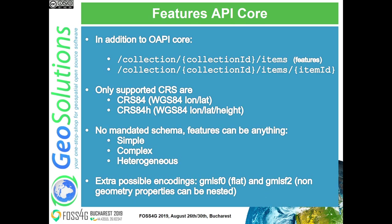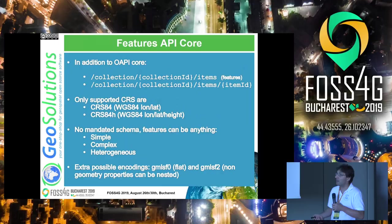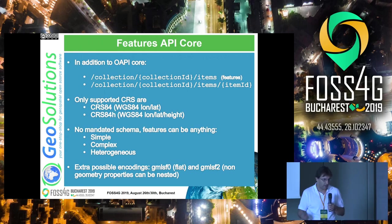The only supported CRSs in core are CRS84 and CRS84H, which adds ellipsoidal height. There is no mandated schema — features could literally be anything: simple, complex, heterogeneous, whatever. As long as you can represent them in the output it's fine. GeoServer is built for simple and complex features, so you would keep on exposing them as they are. But an implementation of the standard could throw back features that have nothing in common with each other and it would still be compliant.